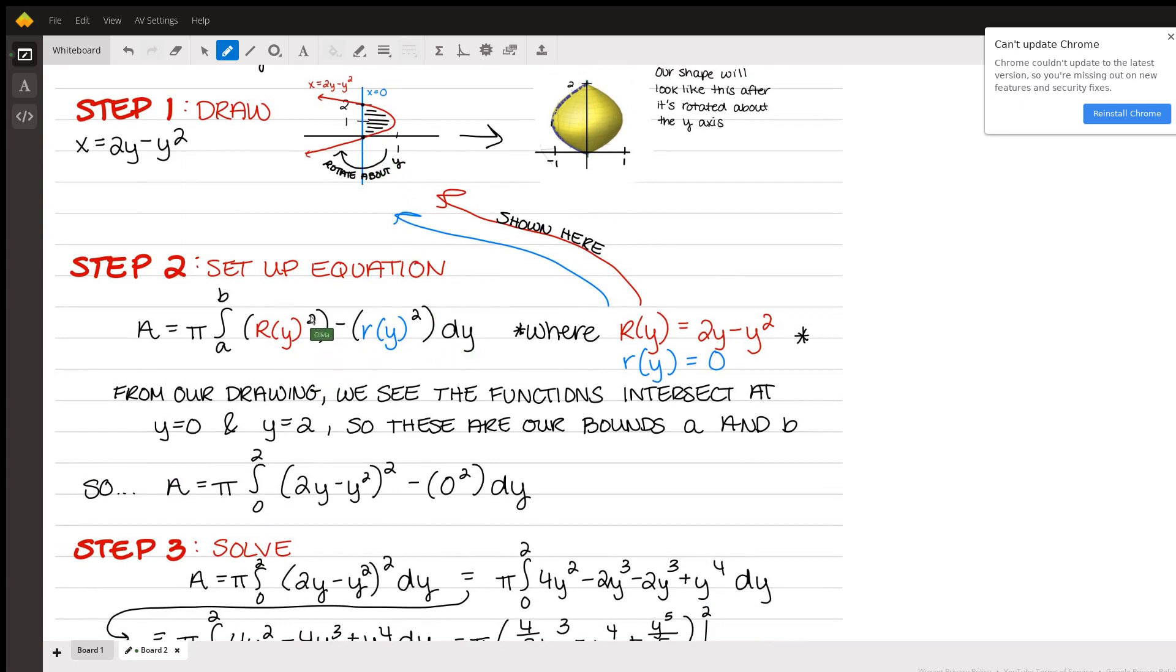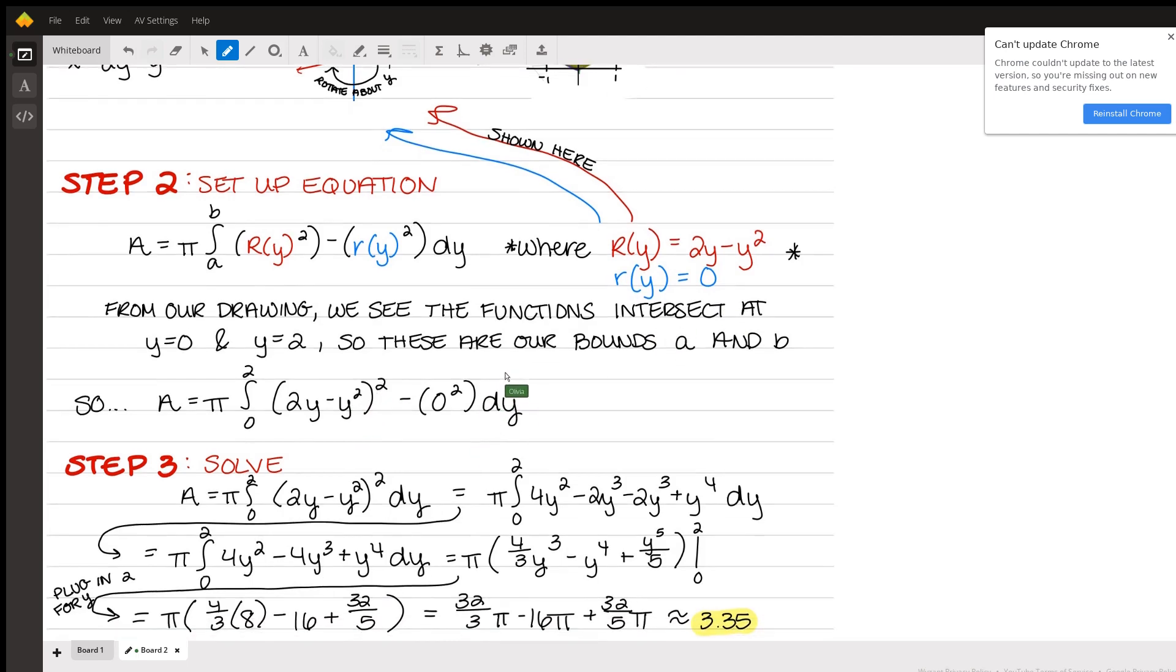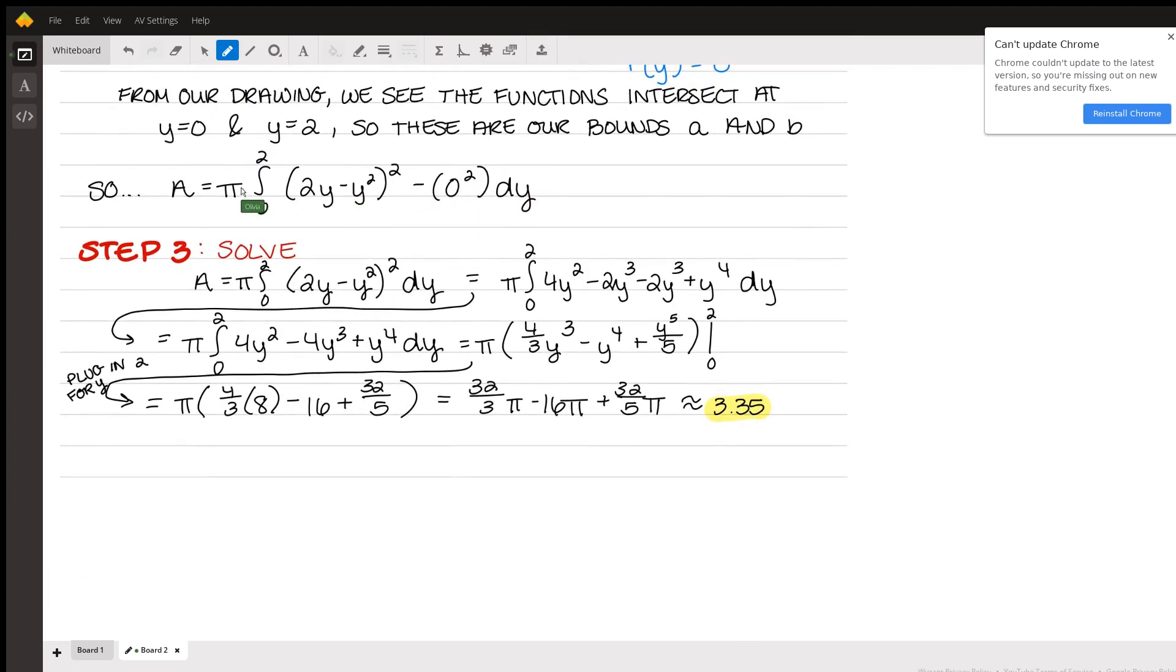So we can plug in everything we need now. We have area is equal to pi. The bounds of integration are 0 to 2 of 2y minus y squared quantity squared minus 0 squared dy. Now that 0 obviously is just going to cancel out. So we don't really need that. But it's important to understand how both of those functions fit into an equation. So going forward, we have everything we need and all we have to do is solve.